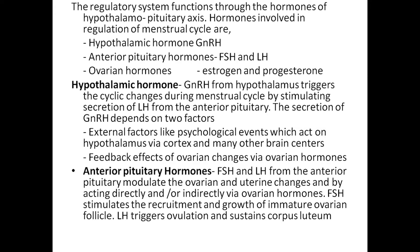The regulatory system functions through hormones of the hypothalamic-pituitary axis. Hormones involved in regulation of the menstrual cycle are: hypothalamic hormone GnRH, anterior pituitary hormones FSH and LH, and ovarian hormones estrogen and progesterone.